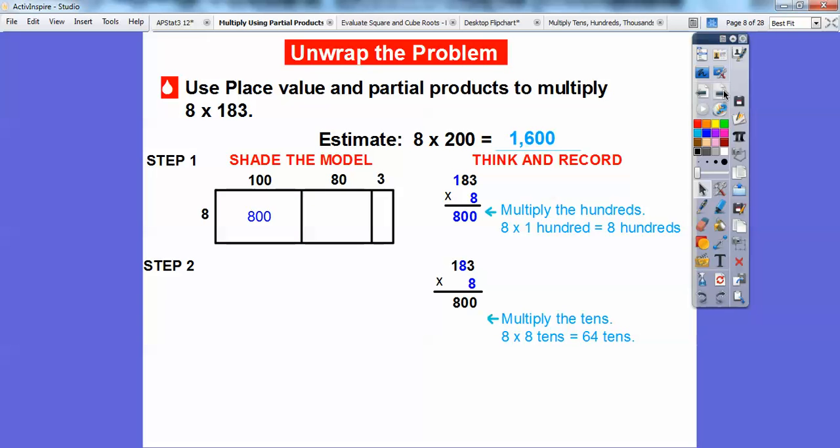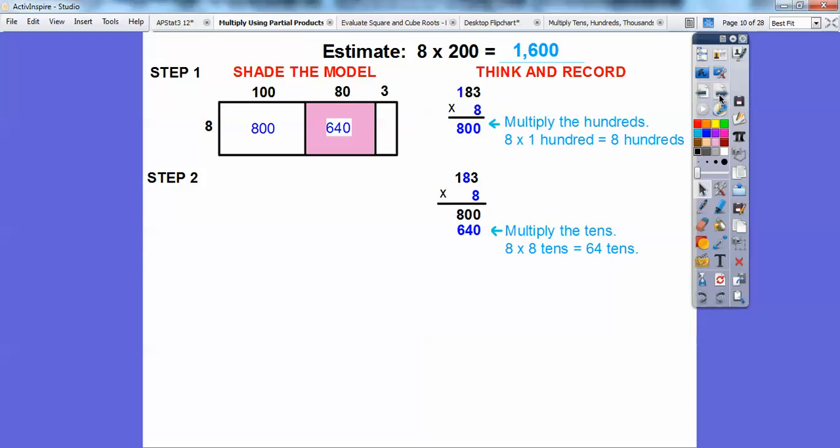Then the next thing we're going to do is multiply the 10s now. This is in the 10s right here. So we're going to multiply 8 times 8 tens. Well, 8 times 8 is 64. So that's going to be 64 tens. So 64 tens is going to be 640 right there. Here's my 64 tens, it ends in a 0. So I shaded this one. This is 64 tens.